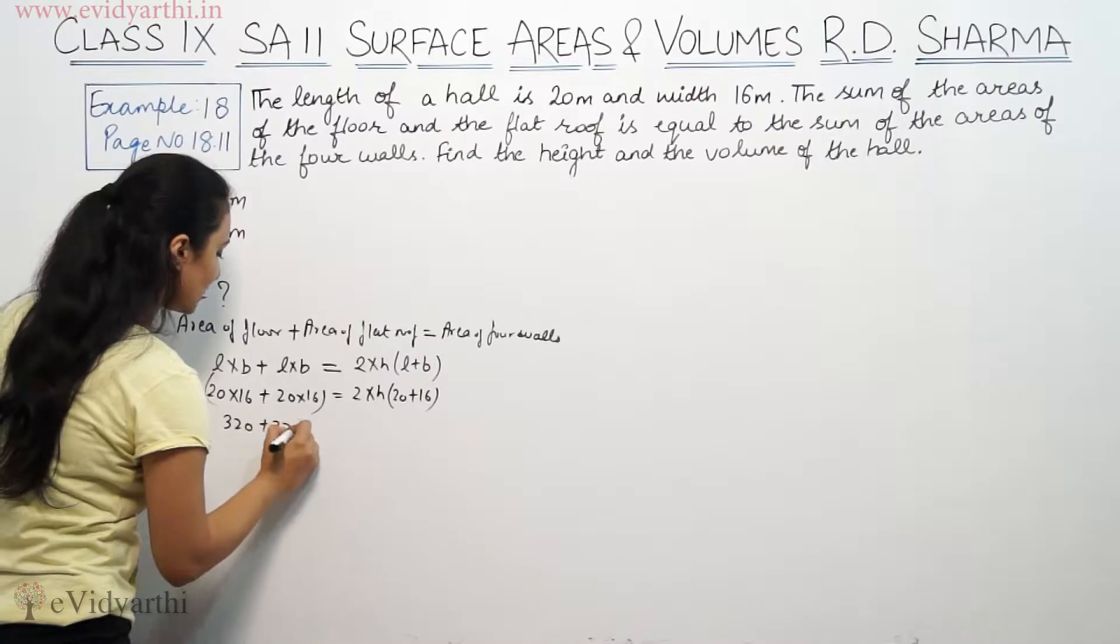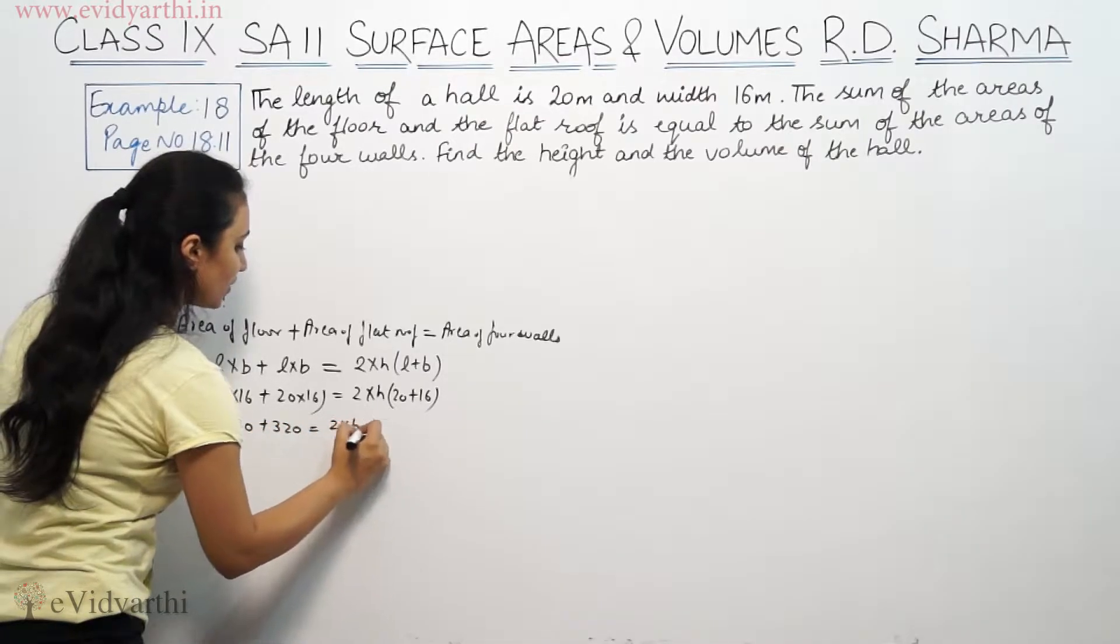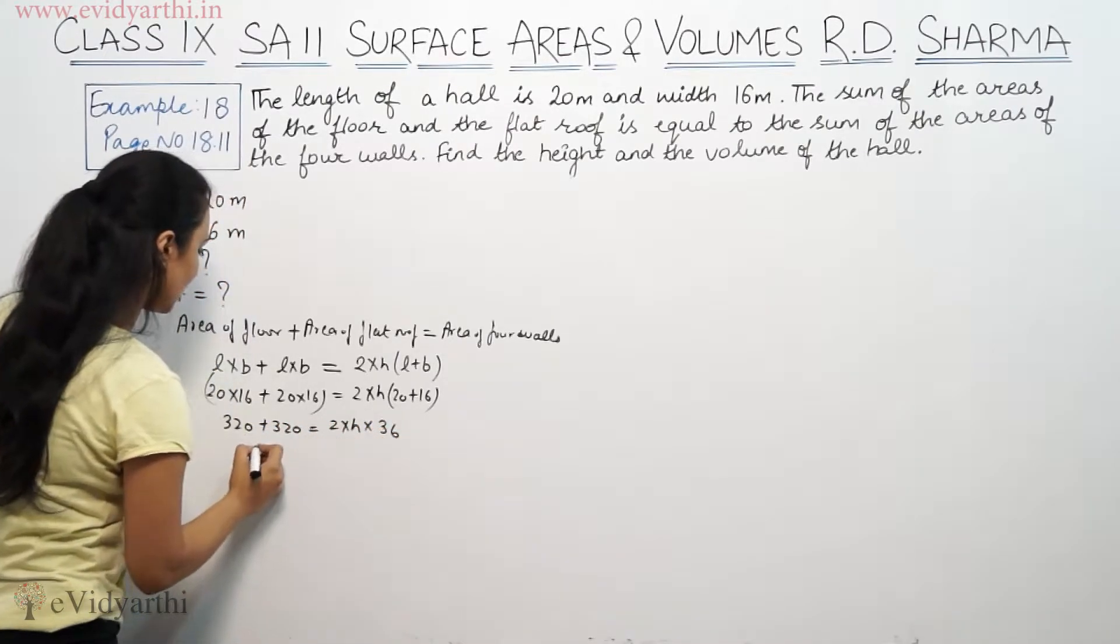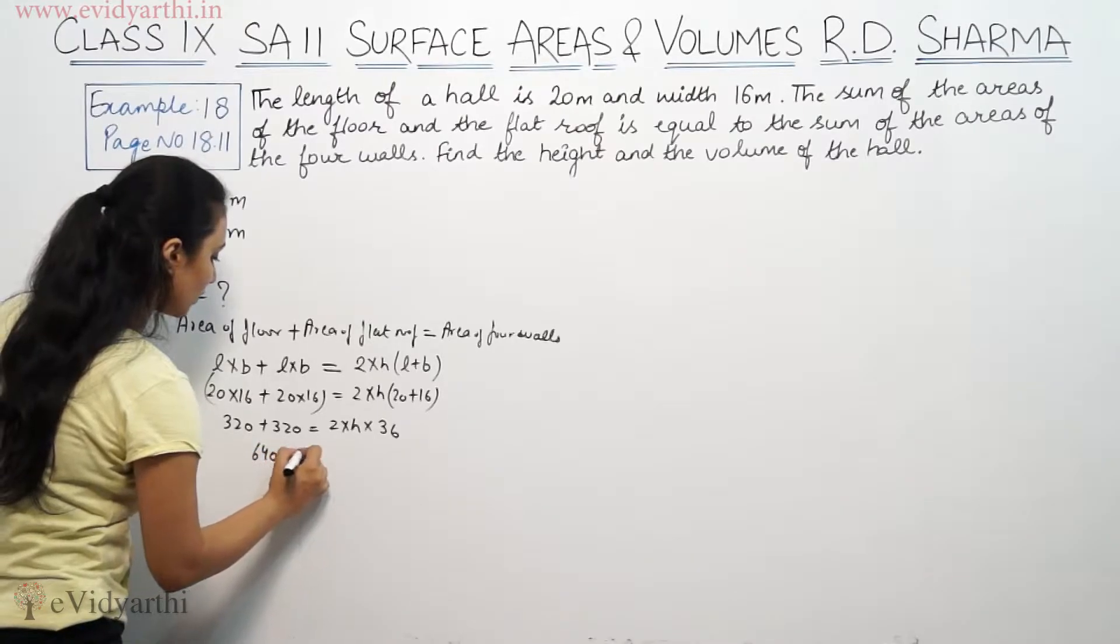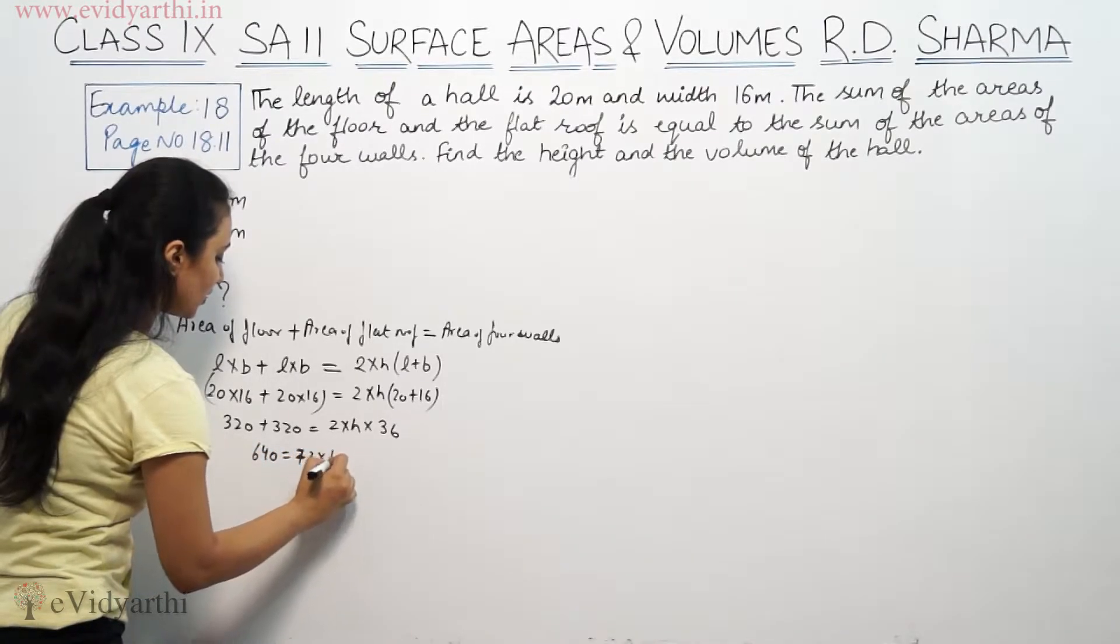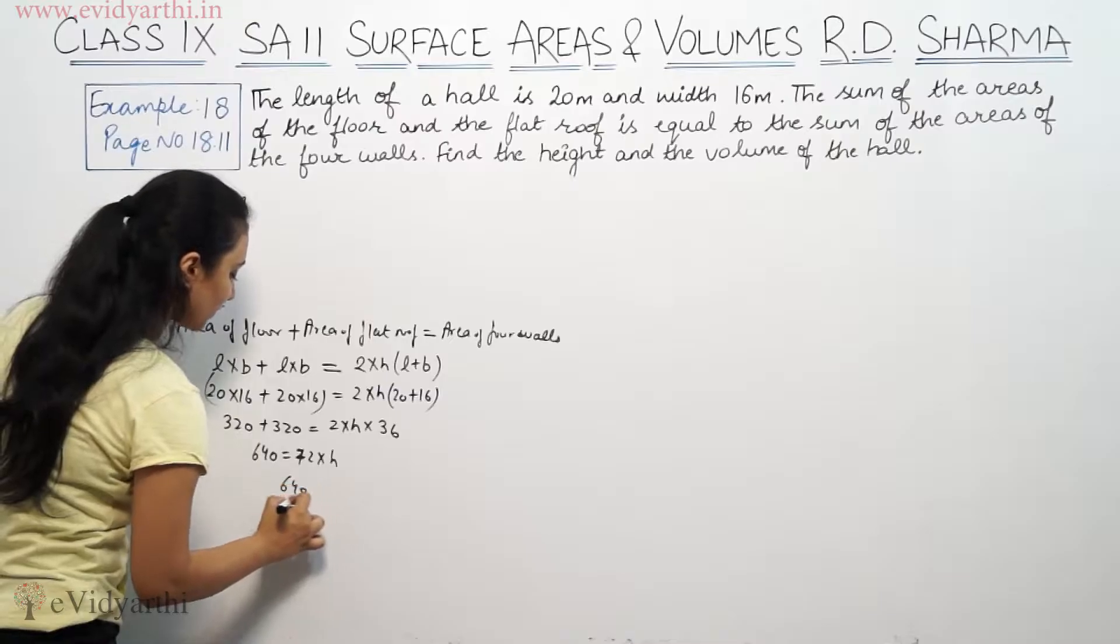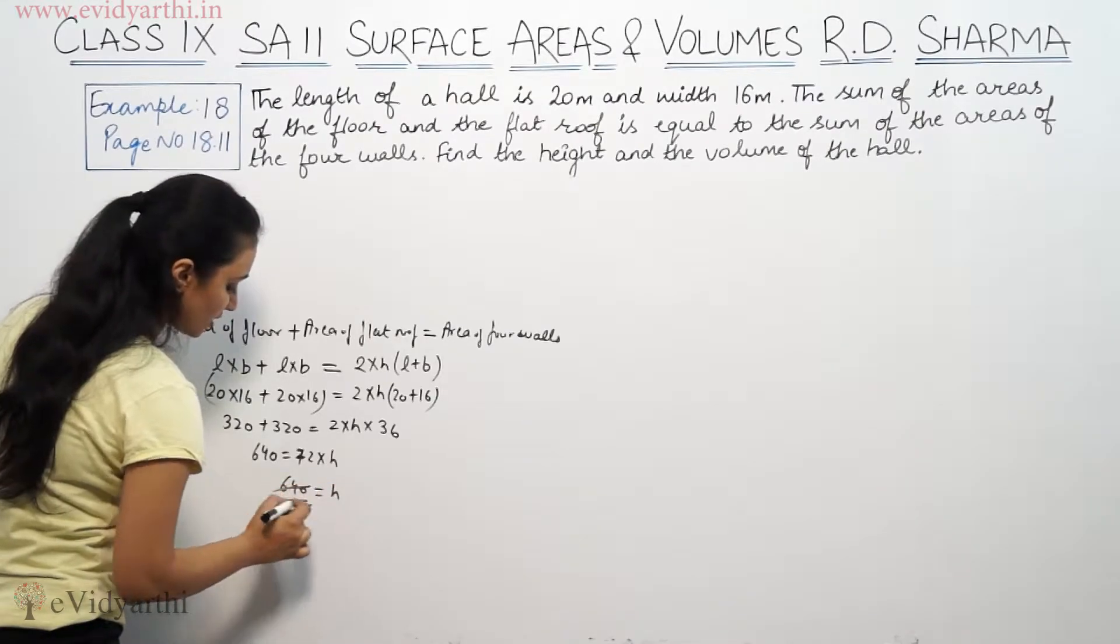So, this is 320 plus 320 equals 2 into H into 36. This is 640 equals 72 into H. So, 640 by 72 is equal to H.